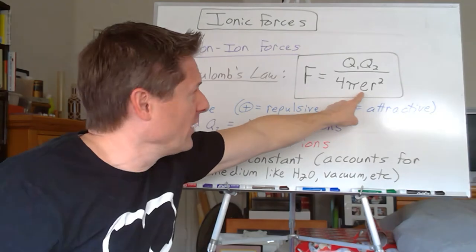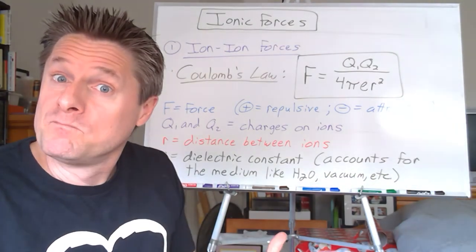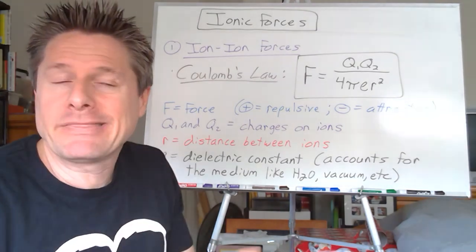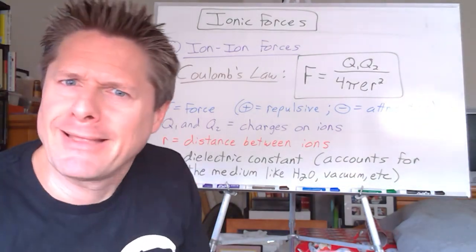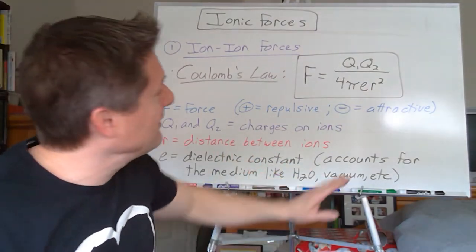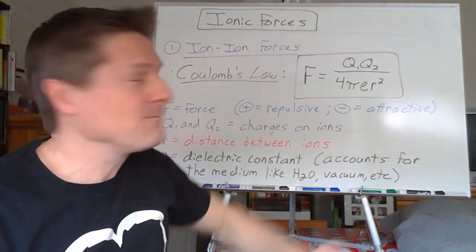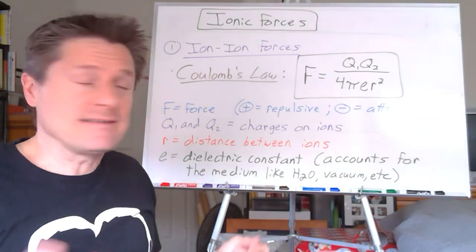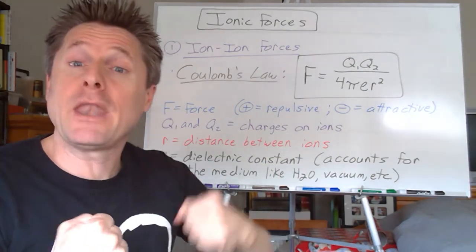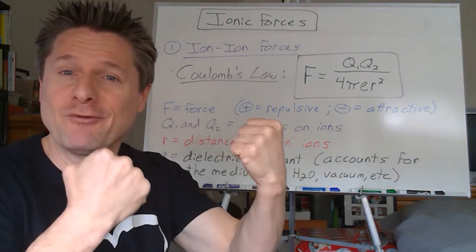We're not going to worry too much about the dielectric constant — think of that as accounting for the medium the ions are in: are they dissolved in water, in a vacuum, in methanol, in ammonia? Each gives a different value. Commonly chemists just lump all those constants together and say the force is some constant times the product of the two charges divided by R squared. So what I want to do next is look at: what if you have an ion with something that's not an ion — an ion with a polar molecule, or an ion with a nonpolar species? They create two different categories of intermolecular forces that are successively weaker.